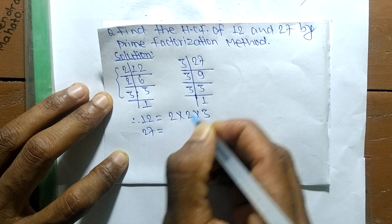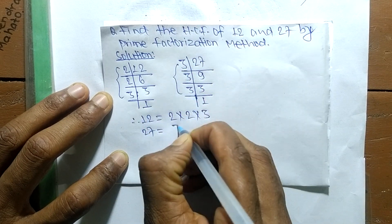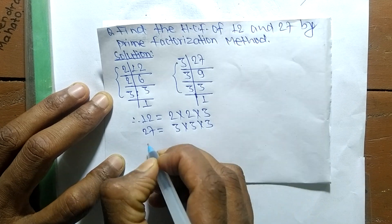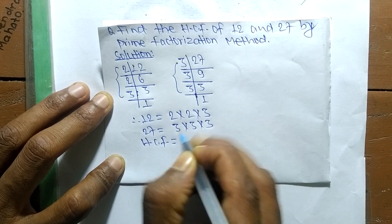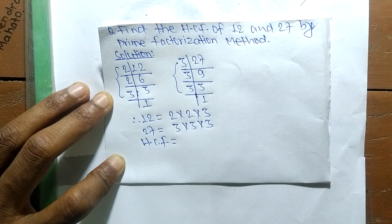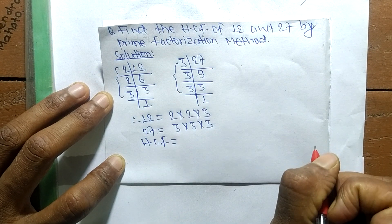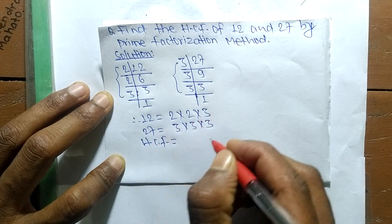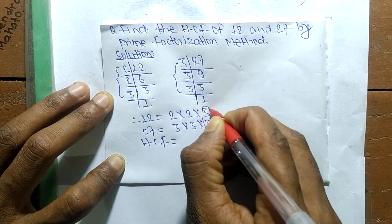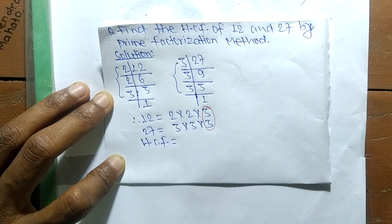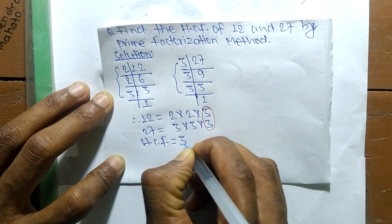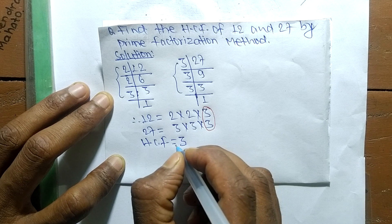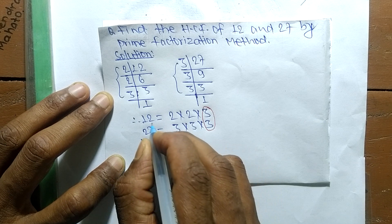For 27, it becomes 3 times 3 times 3. Now we find the common factors in the prime factors of 12 and 27. The common factor here is 3, so the HCF is equal to 3. That is the only highest common factor of 12 and 27.